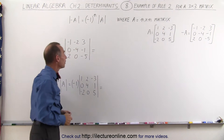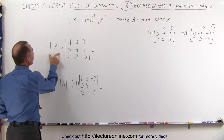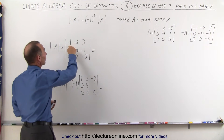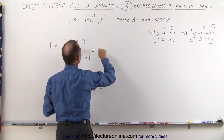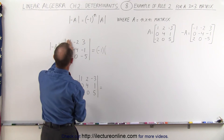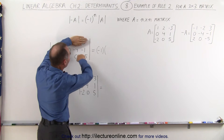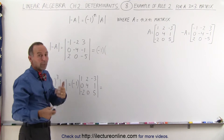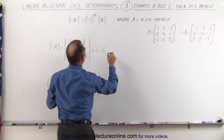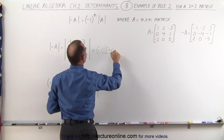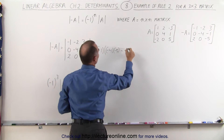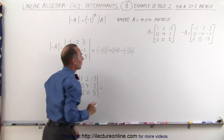Here we're going to take the determinant of the negative of matrix A. We take the first upper-left element, negative 1, and multiply it times — we cover up this column, we cover up this row — that leaves us these four elements. We write out the product of the diagonals as if we have a 2 by 2 matrix, so this becomes negative 4 times negative 5, minus the product of the other diagonals, which is negative 1 times 0, giving 0.